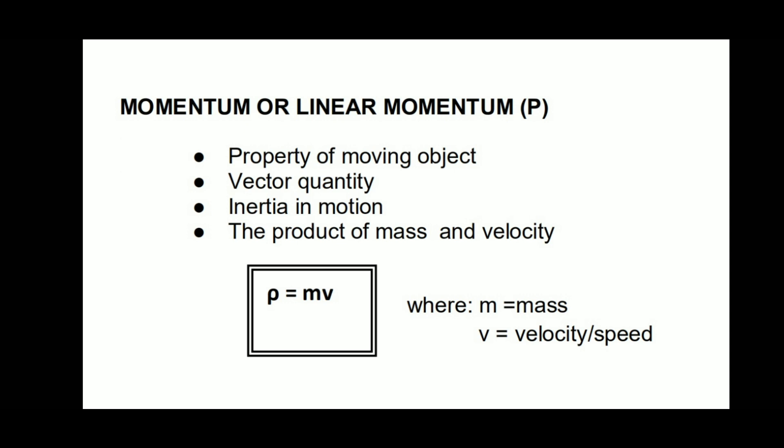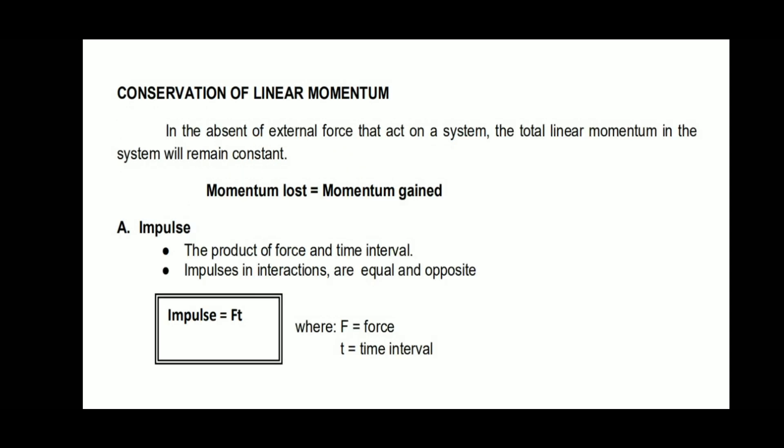Momentum, or linear momentum, denoted by p, is a property of a moving object. It is a vector quantity — inertia in motion — and is the product of mass and velocity: momentum equals mass times velocity. Conservation of linear momentum: in the absence of external force acting on a system, the total linear momentum of the system will remain constant. Momentum lost equals momentum gained.